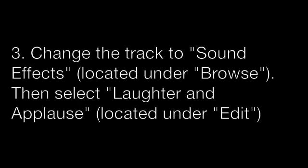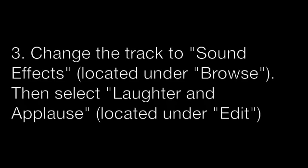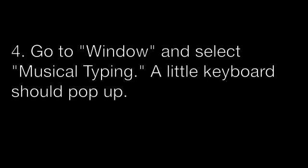There are a few steps we have to go through to start the sampling process. One, drag in your audio that you want to sample. Two, create a software instrument track. Three, change the preferences of that track to sound effects, and then create an applause laughter track. Next, go to Window in your browser and go down to Musical Typing, which will show you a visualization of the keyboard. If you're using a MIDI keyboard, you can just hit the keys, or if you're on a computer without a MIDI keyboard, you can use the actual keypad keys.